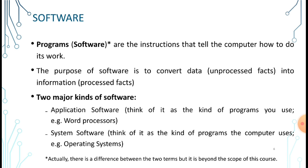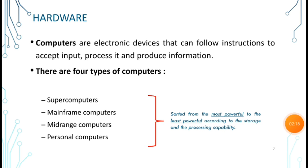The next part of the information system is hardware. A computer is defined as an electronic device that follows instructions to accept input, process it, and produce information as output.